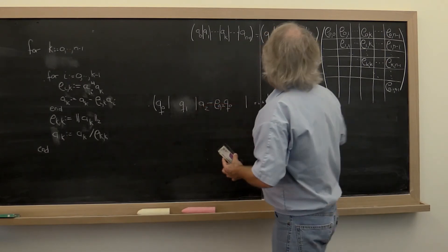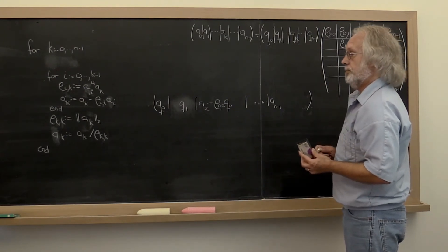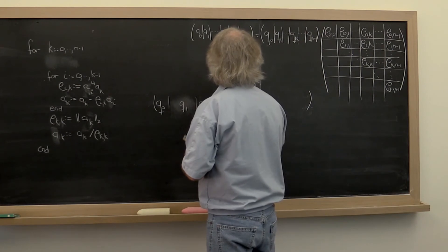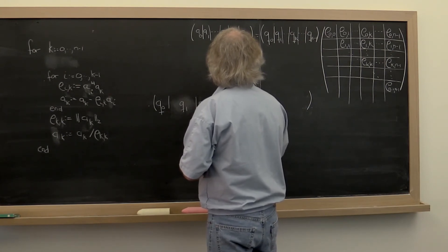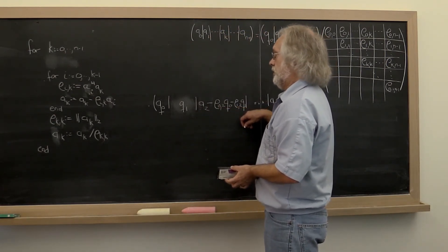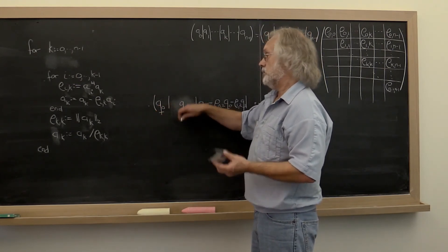And that then allows us to compute the next entry actually in the second row here. Then we subtract it off. And at that point we will have subtracted off rho_12 times q_1. That then is the component that is orthogonal to q_0 and q_1. So that's good.